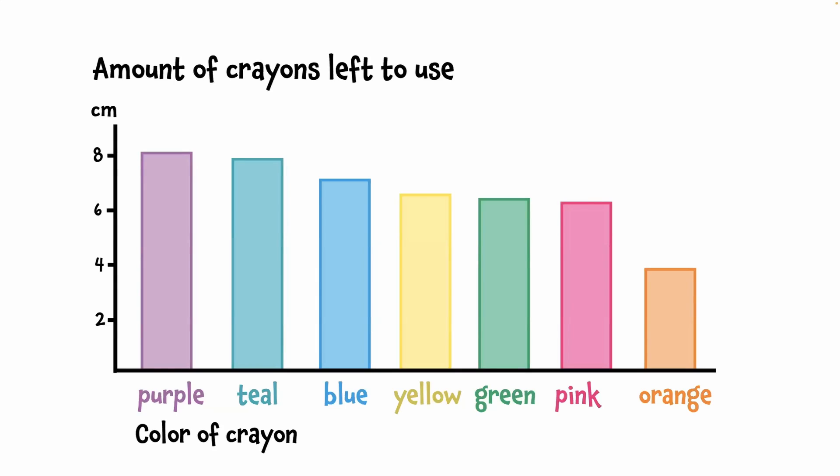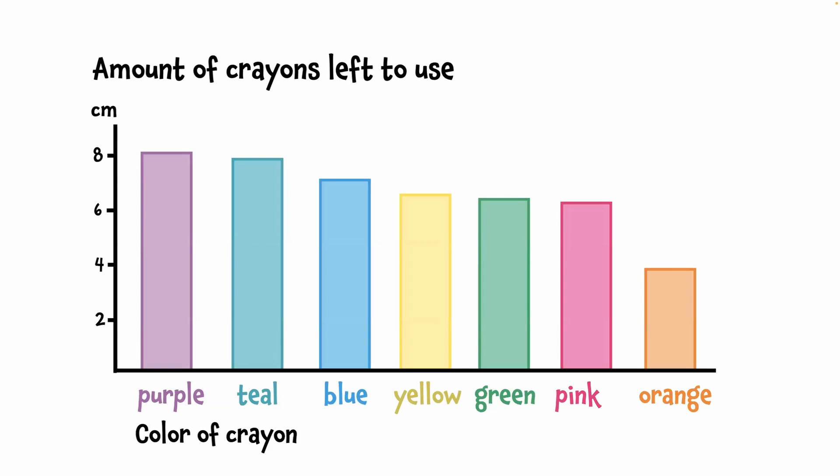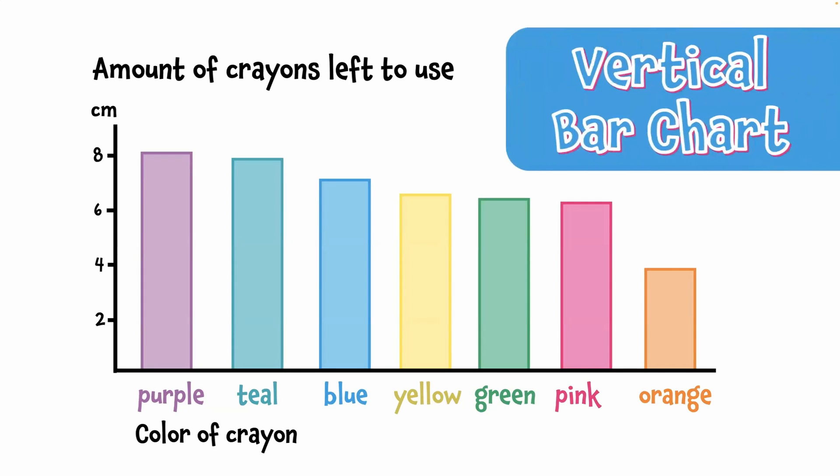There are a few different types of bar charts, and they each have their own name. What you see here is probably the most common type of bar chart. Sometimes people call it a column chart, because the bars look like columns. It's also sometimes referred to as a vertical bar chart.